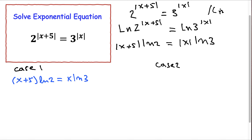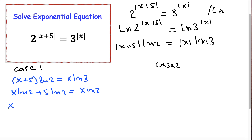Distributing LN 2 inside the parenthesis, we get x LN 2 plus 5 LN 2 equals x LN 3. Subtracting x LN 3 and 5 LN 2 from both sides — putting 5 LN 2 on the other side and x LN 3 on the other side — this equation becomes: x LN 2 minus x LN 3 equals negative 5 LN 2.